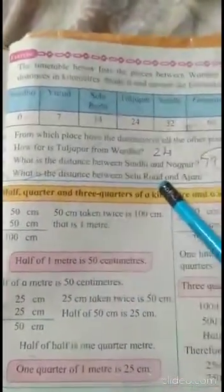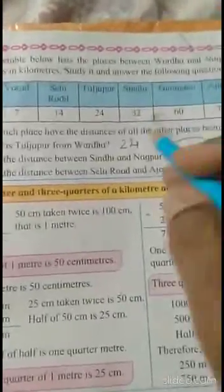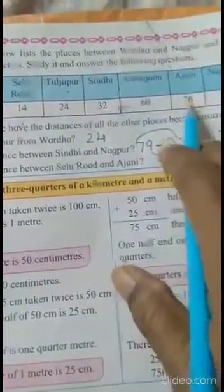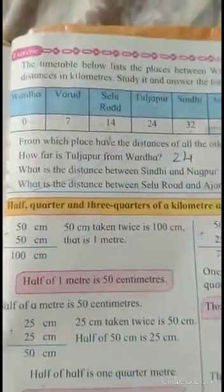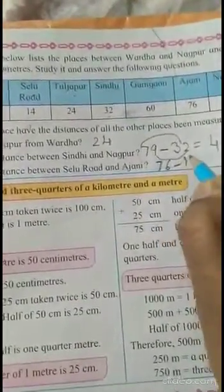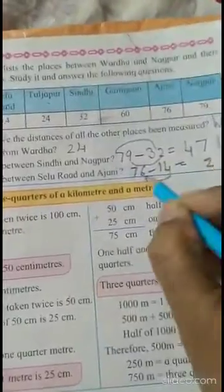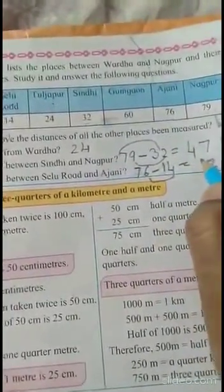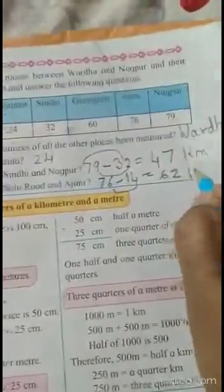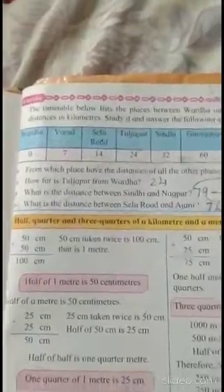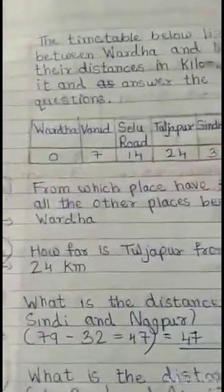Next question: what is the distance between Selu Road and Ajani? Selu Road is given as 14 and Ajani is given as 76. So we have to subtract 14 from 76. We write 76 minus 14: 6 minus 4 gives 2, and 7 minus 1 gives 6. So the answer is 62 kilometers. The distance from Selu Road to Ajani is 62 kilometers.